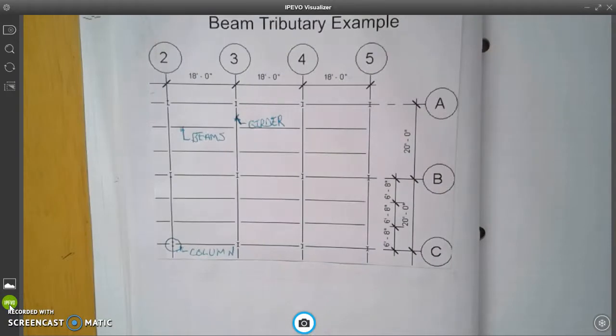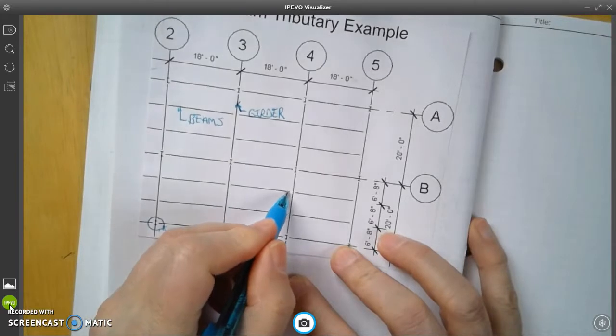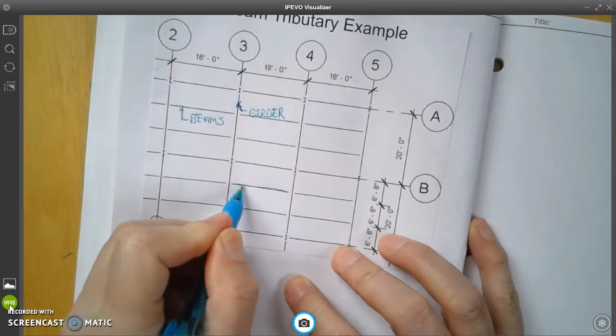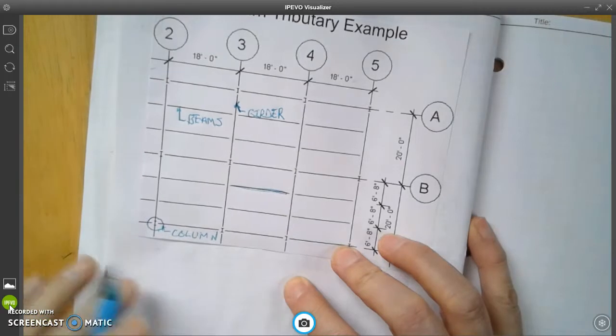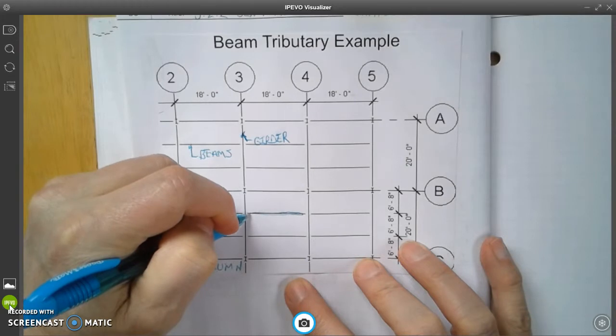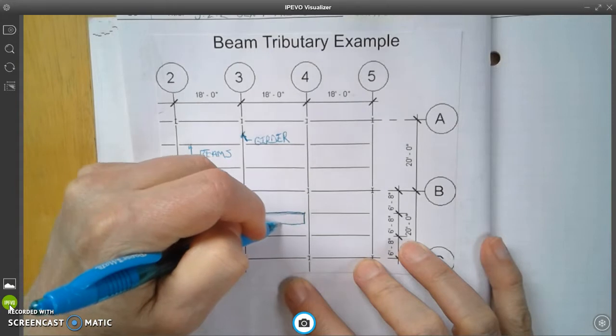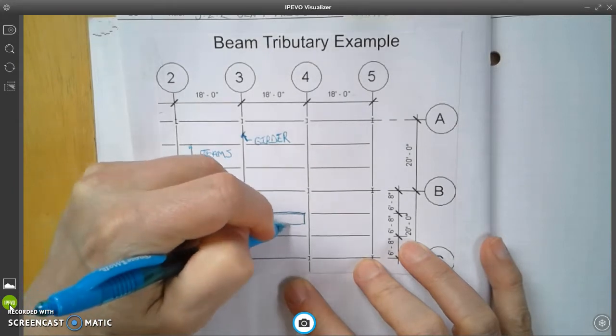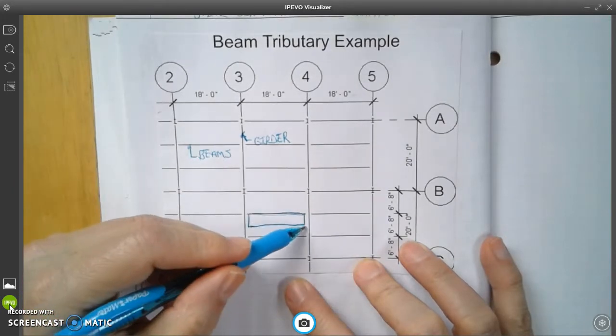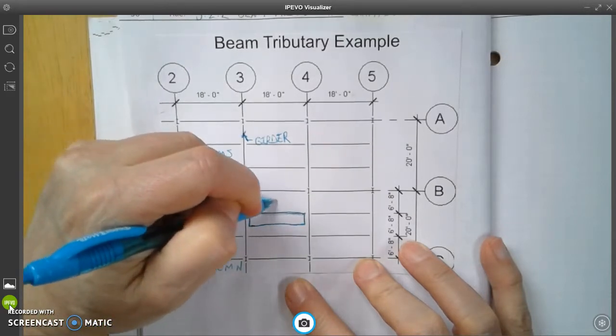Alright, let's look at what the tributary area is. If we have a beam, like I'm going to highlight this beam right here, this one right here. If we have a beam that has a support that goes across right here, this is about halfway down to the next beam and also halfway up to the beam above it.